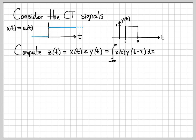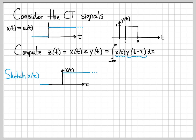What we need to do is figure out what these signals in the integral look like — sketch them, figure out what their product is, and find the area of their product. Sketching x of tau is really simple because it looks exactly like x of t. We simply replace all the t's with tau and resketch the signal. So x of tau looks just like x of t; we're just using a different variable to index the signal. That's always the easy one.